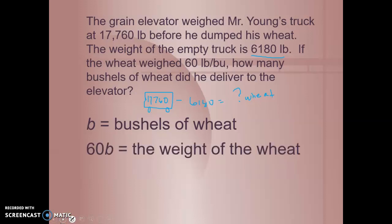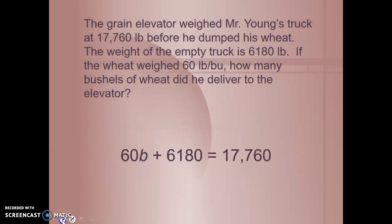Or we can write an expression. Bushels of wheat is represented with b and 60b is the weight of the wheat. 60 pounds a bushel. 60 pounds a bushel plus the weight of the truck equals 17,760. See if you can solve that one on your own and we'll check it in class.